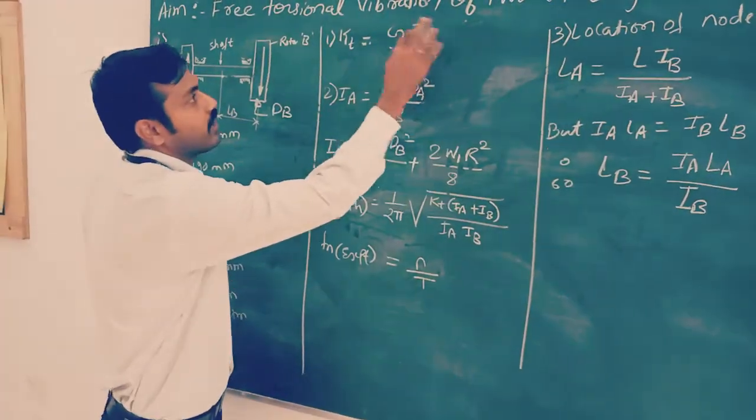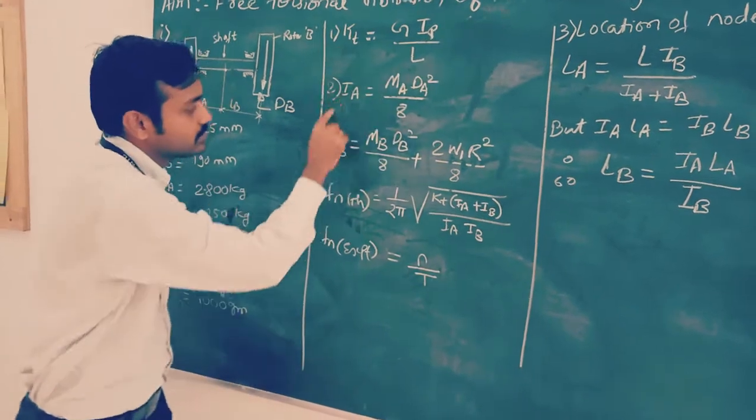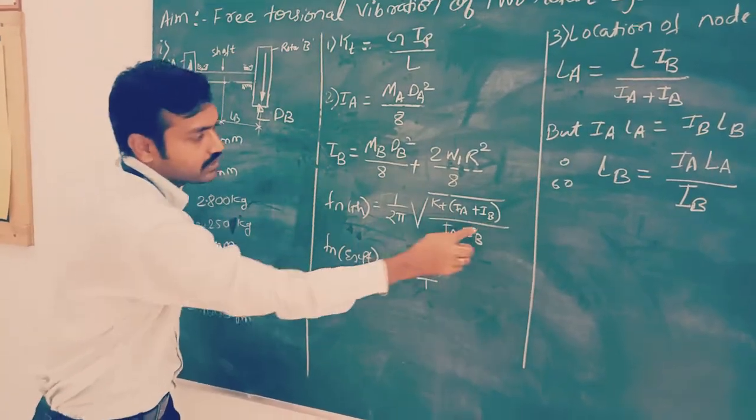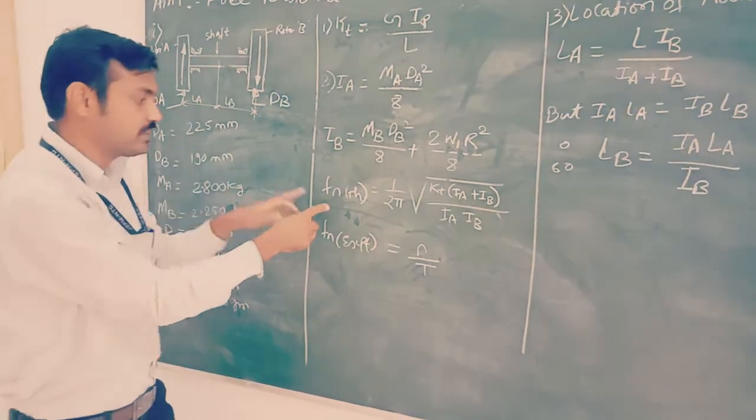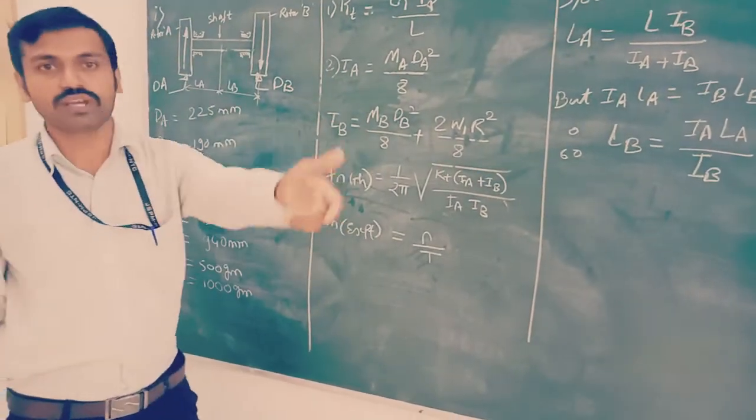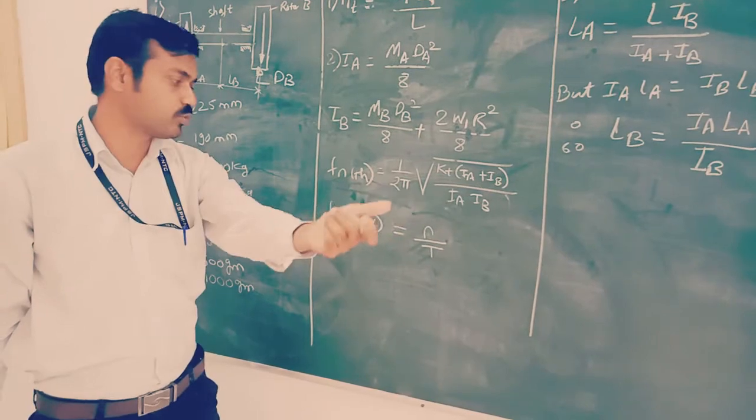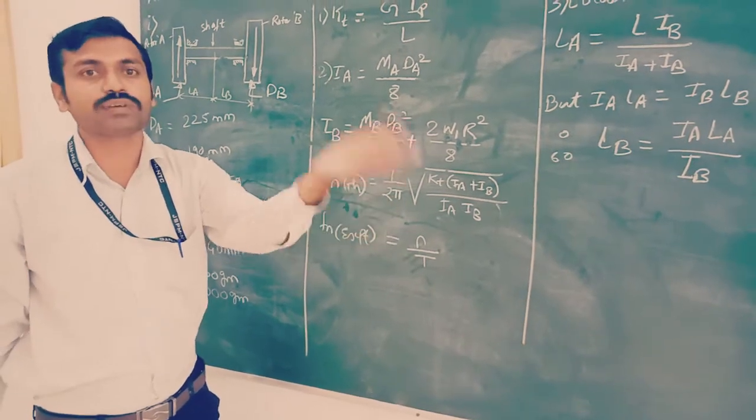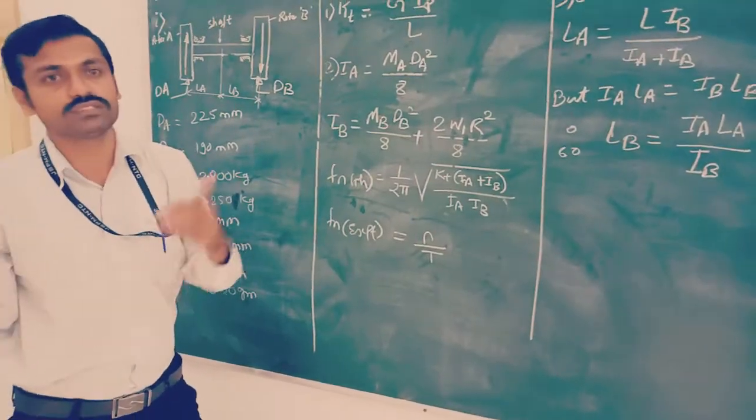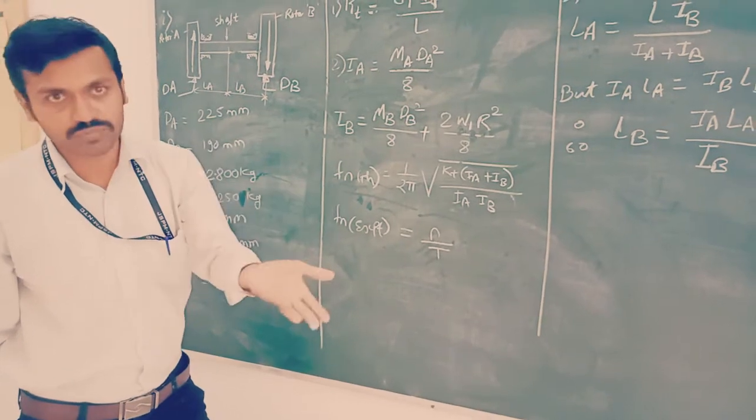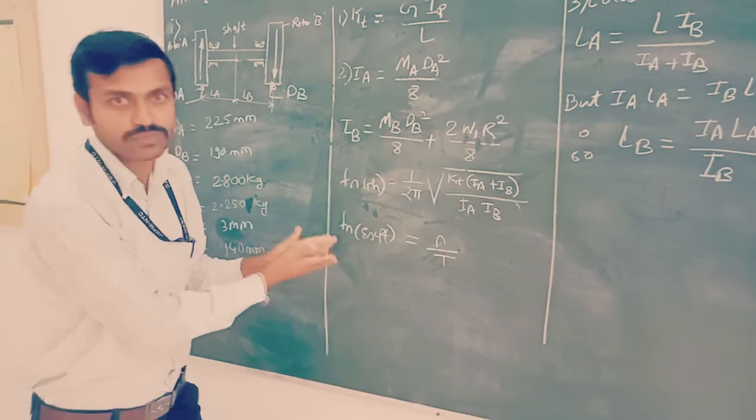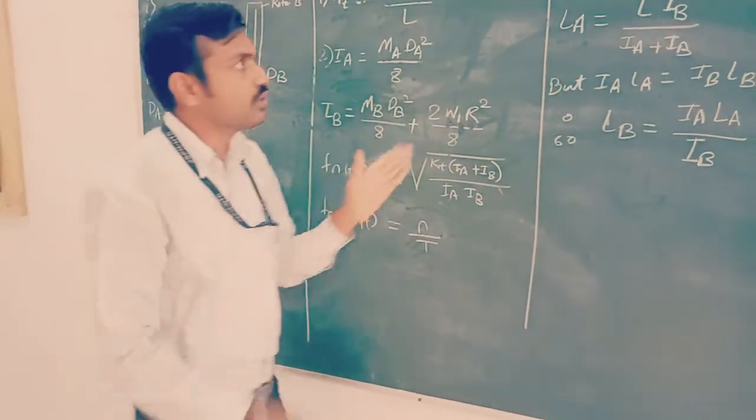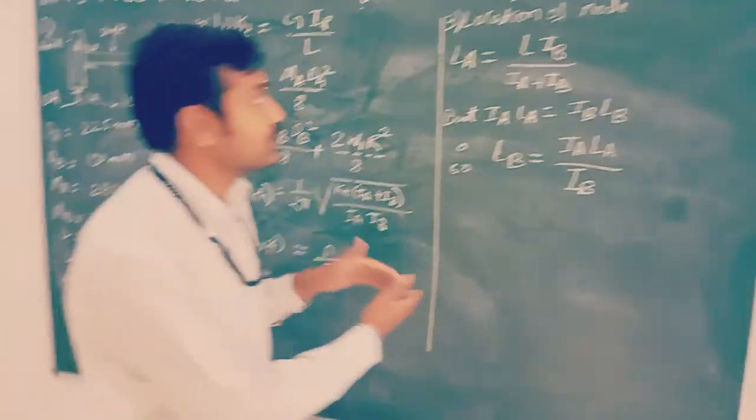For Ib, for the disk where that load or extra mass is attached, Ib equals Mb Db squared upon 8 plus this factor. W is the weight attached, R is the radial distance between center and mass center. By putting these three values KT, Ia, Ib in this equation we will come to know the theoretical frequency. The experimental frequency we have calculated with the help of stopwatch. From time period we convert into frequency because frequency is the reciprocal of time period. We have to compare these two values, theoretical frequency with experimental frequency. It has to be nearer to each other.